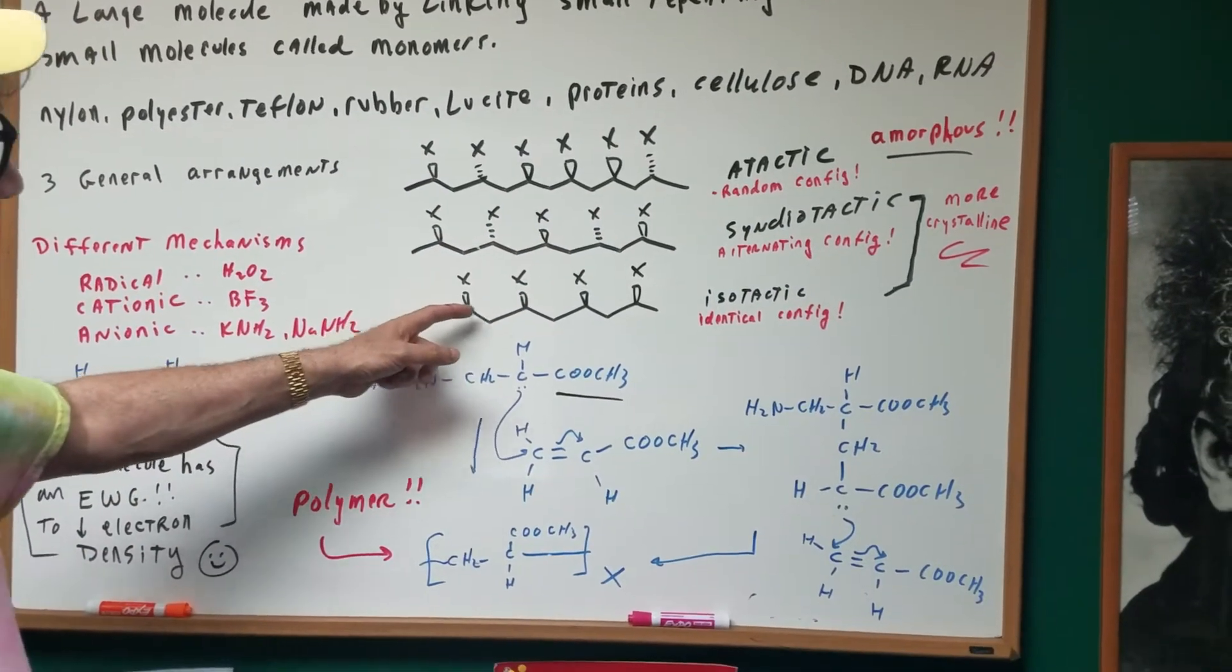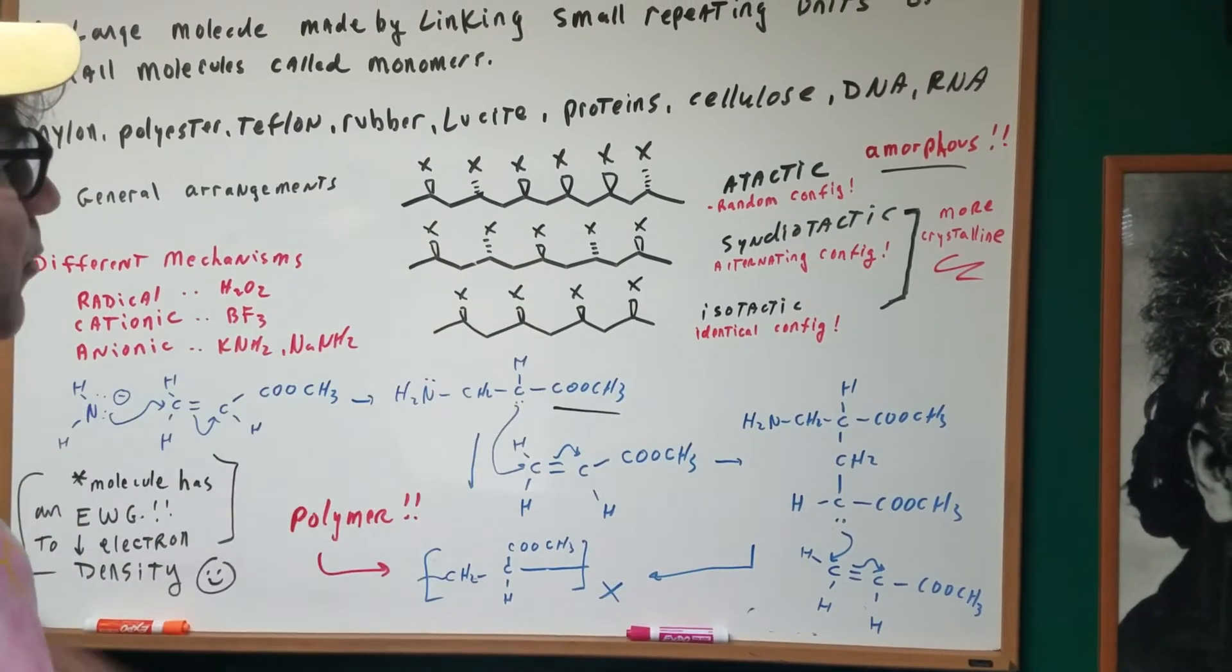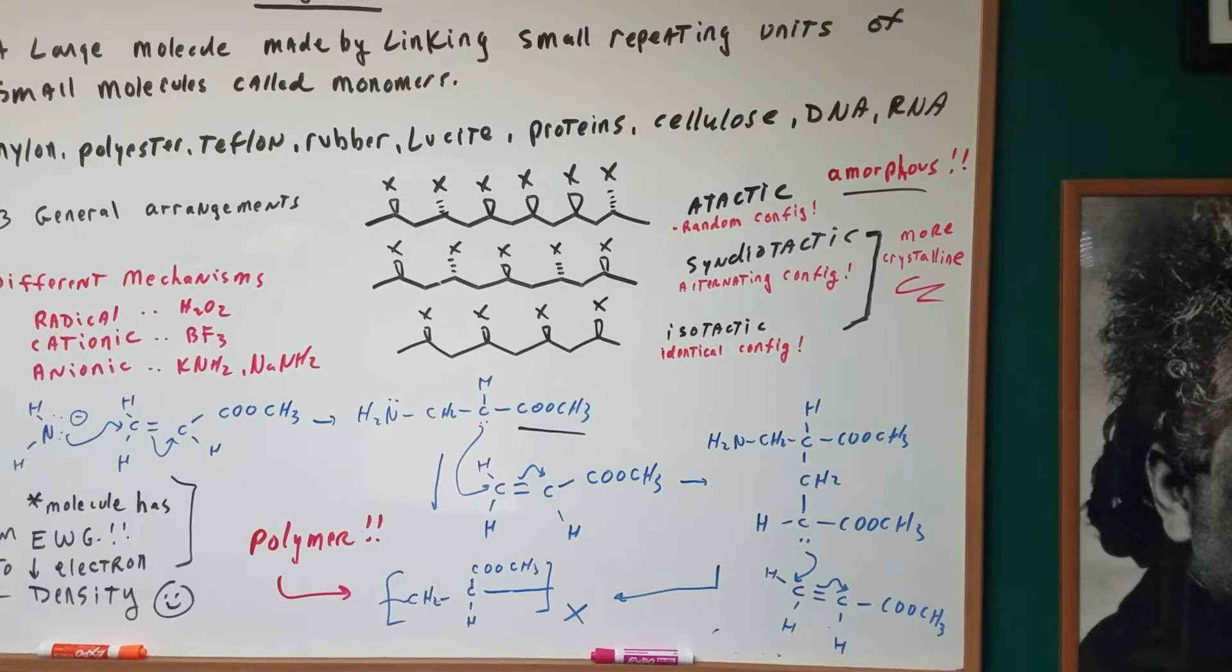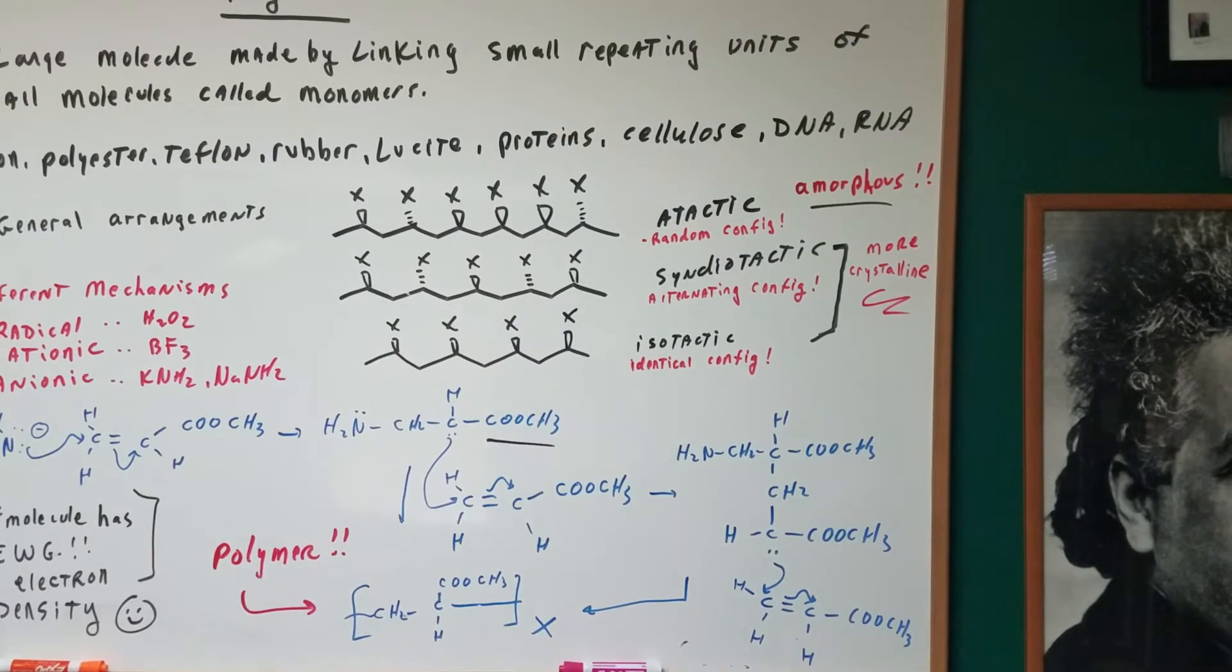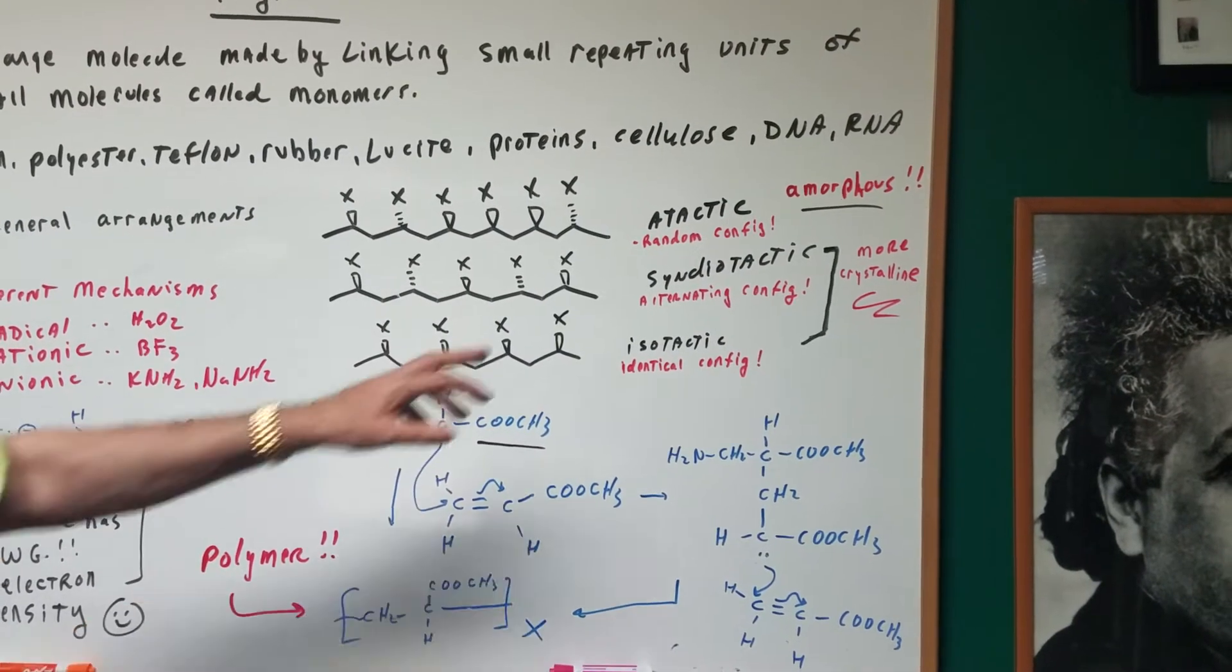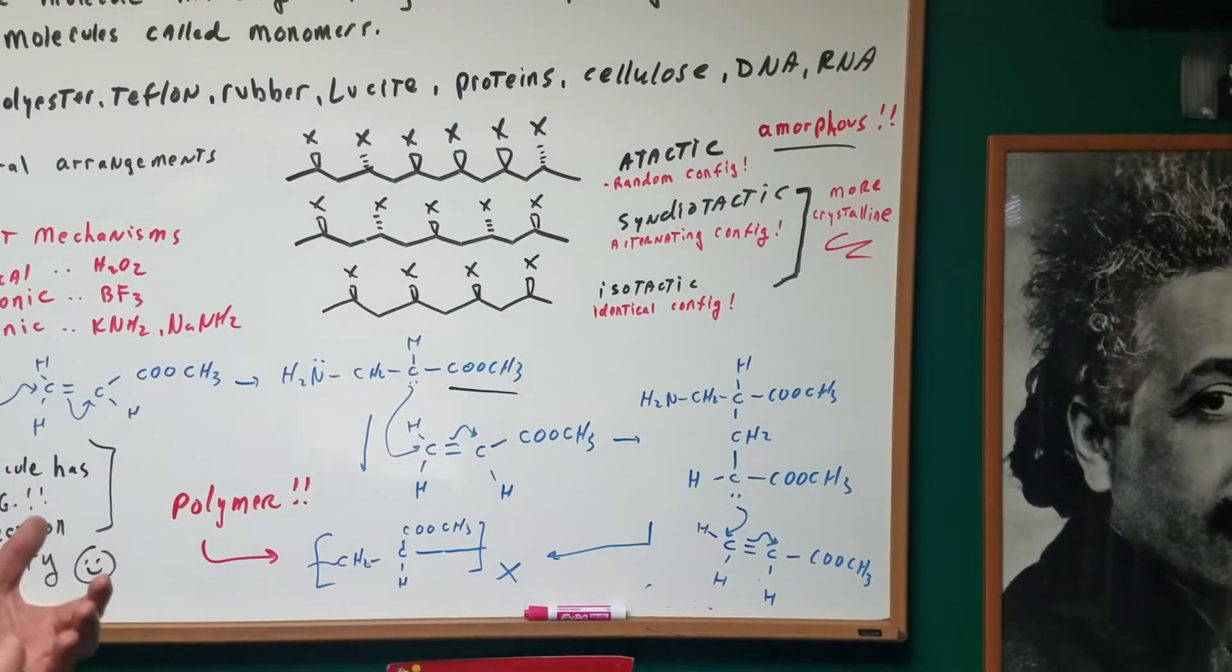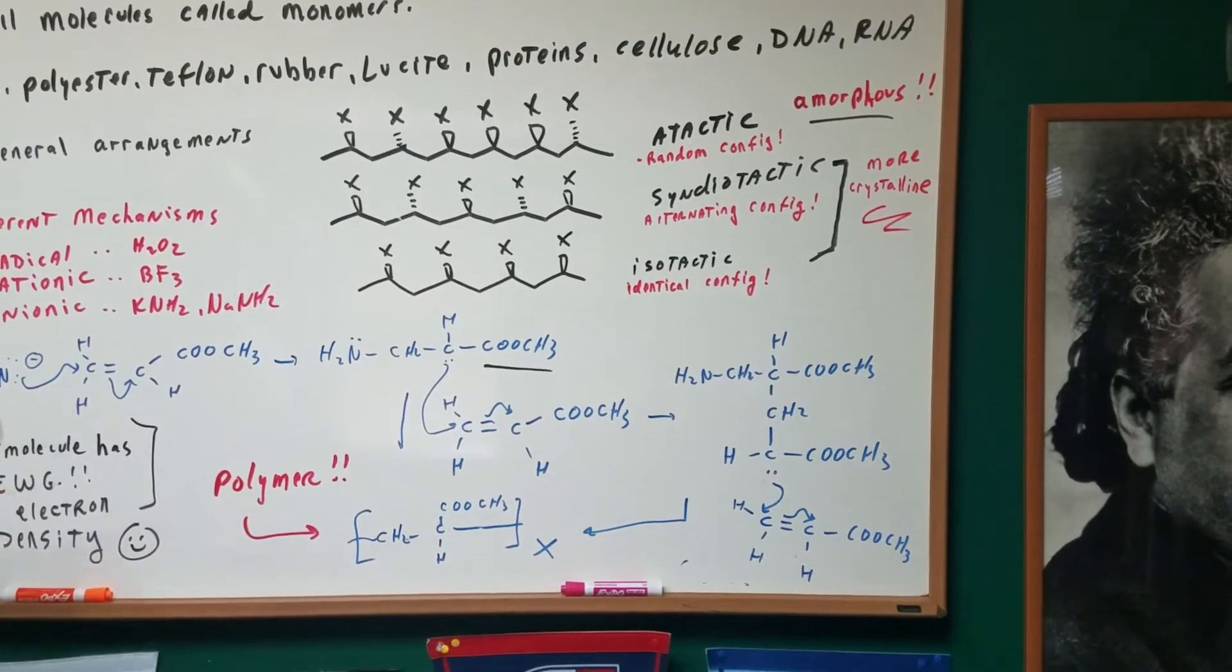And then isotactic is when we have an identical configuration. All the groups are going in the same direction. The key thing to get out of this is to understand if it's atactic, we're going to have a solid polymer that's amorphous. If it's syndio or isotactic, it's going to be more crystalline. Always a tough question on an exam to remember, so make sure you got that.